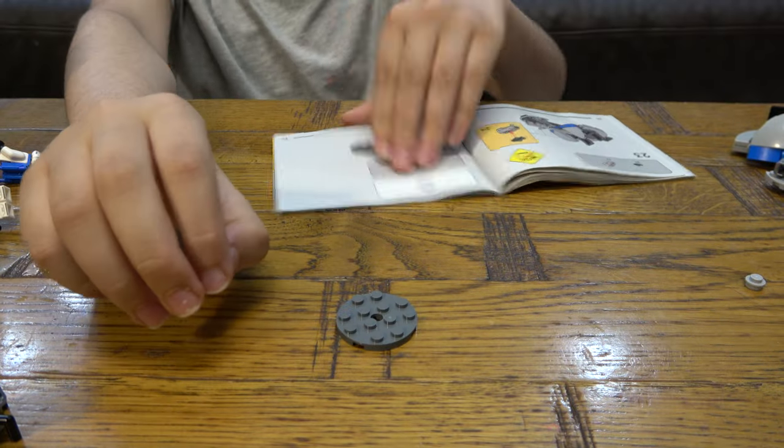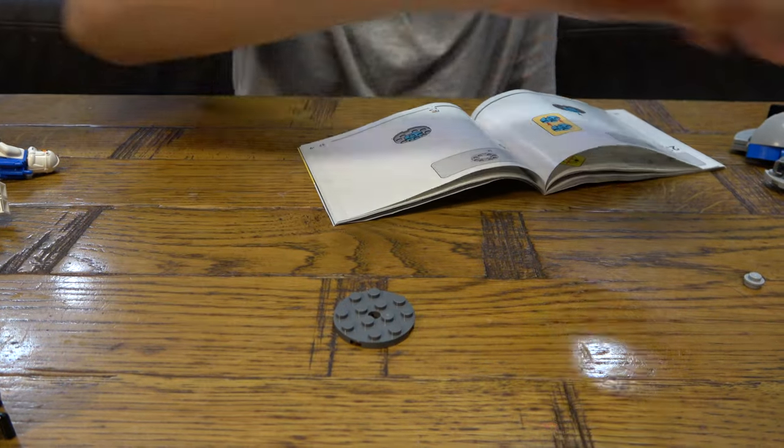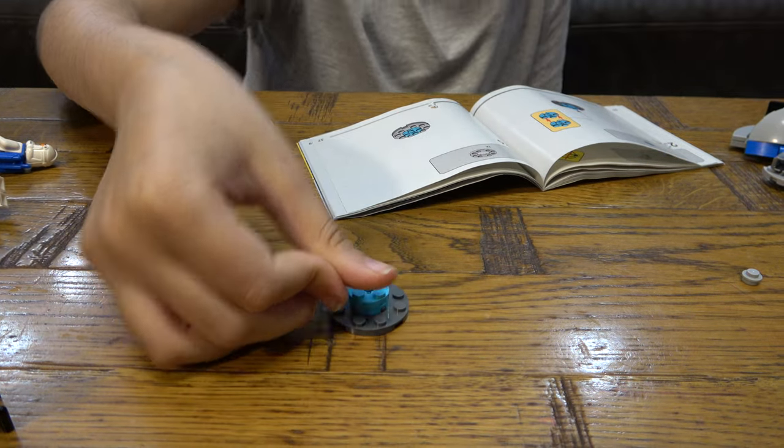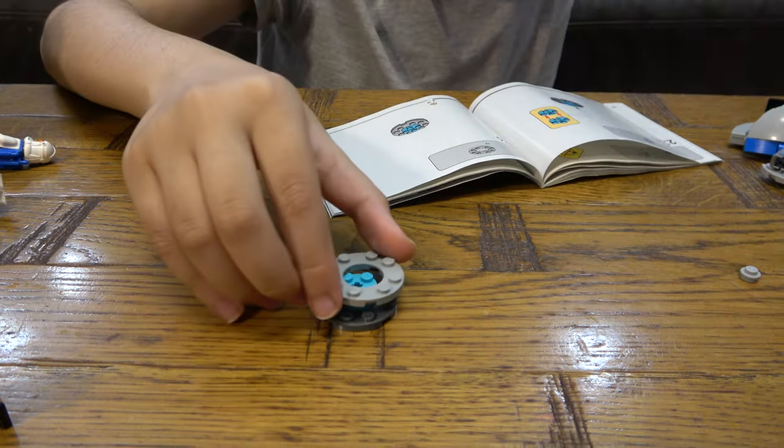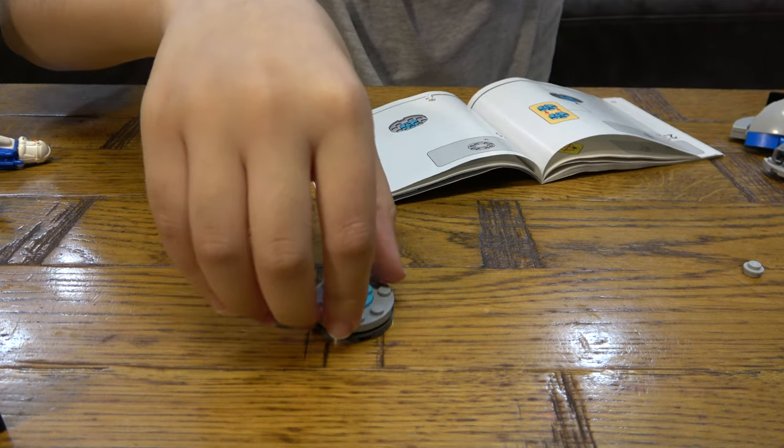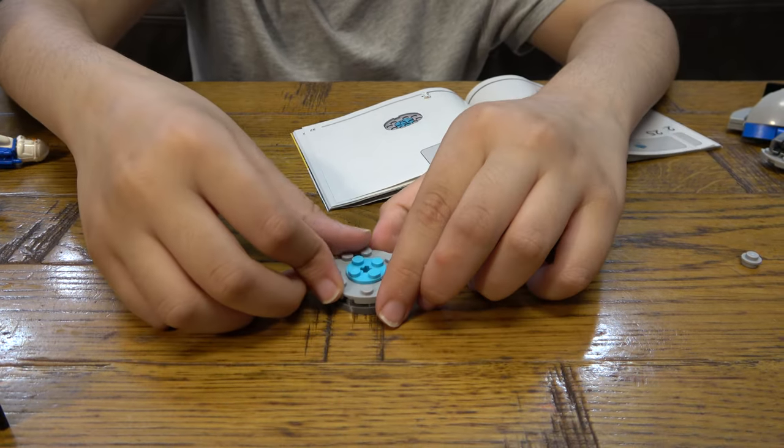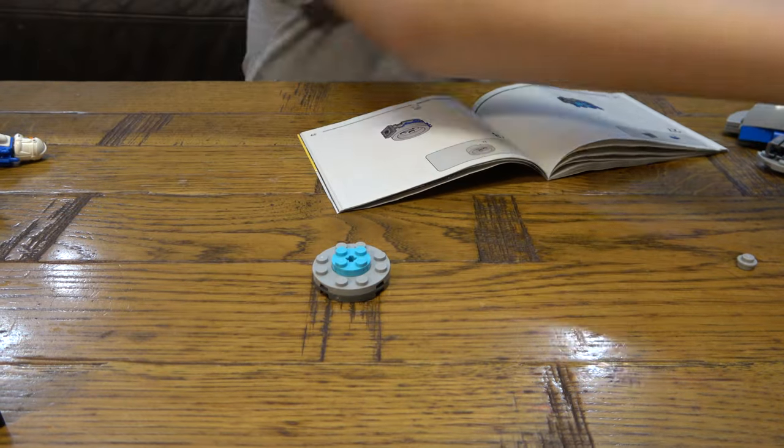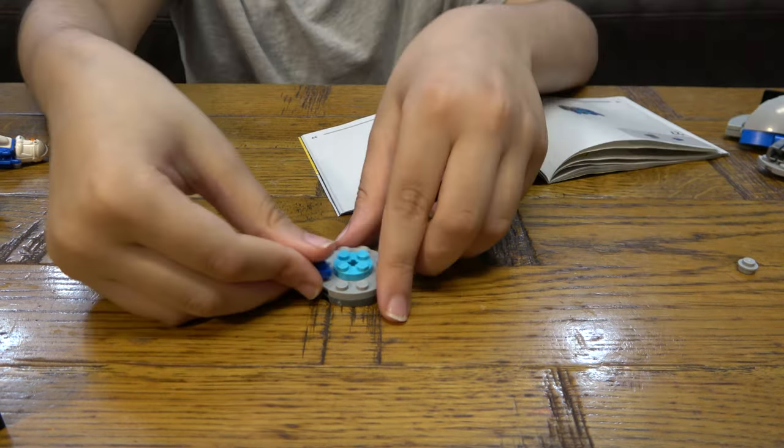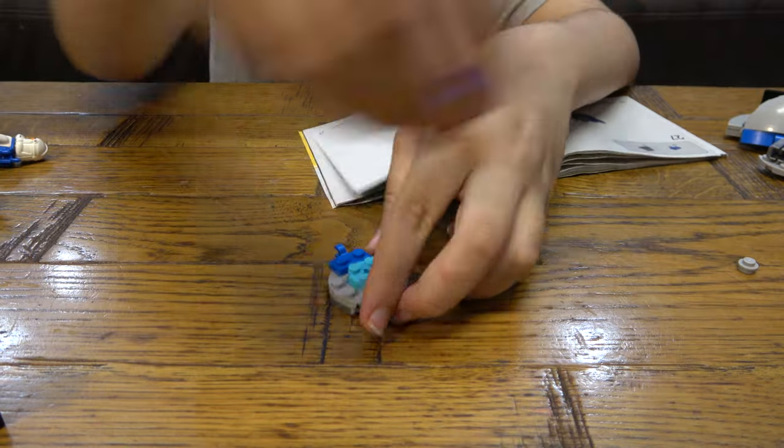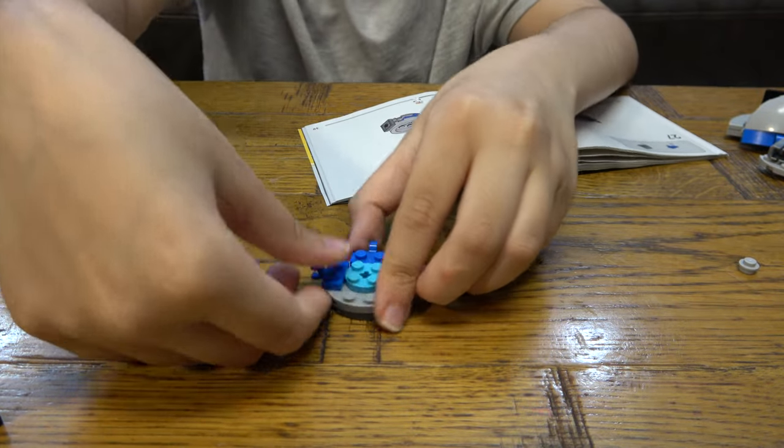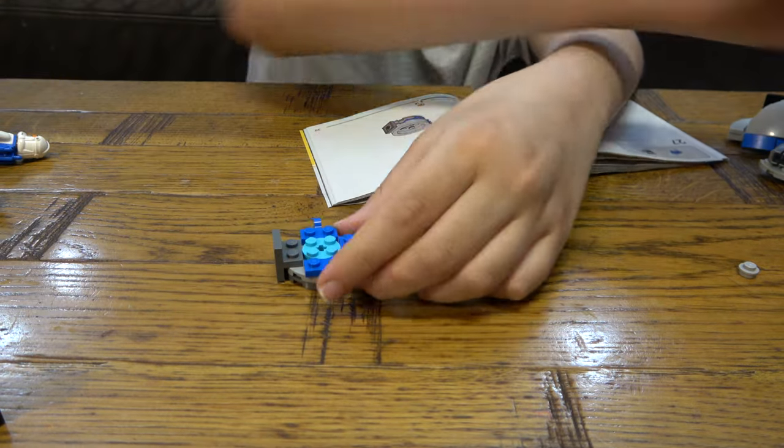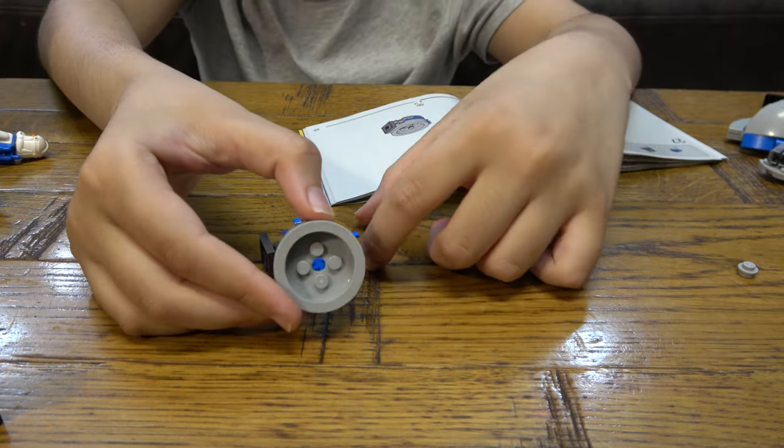It's telling us to get this, place two of these on top of each other. So then we can place this on here like so. And then guys, if you remember in the unboxing video for this, guess what we got? New piece alert.